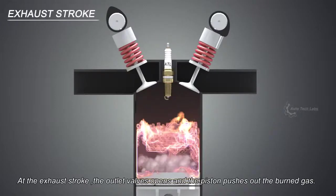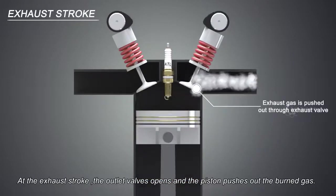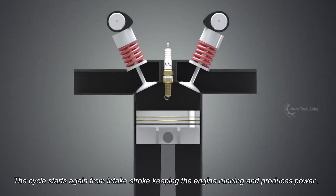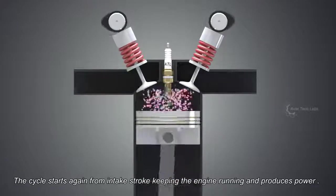At the exhaust stroke, the outlet valves open and the piston pushes out the burned gas. The cycle starts again from intake stroke, keeping the engine running and producing power.